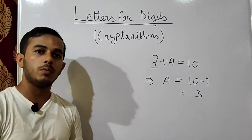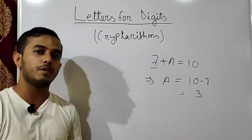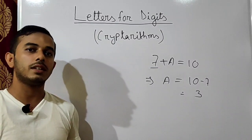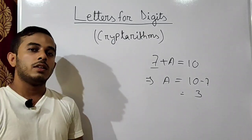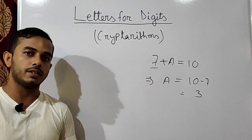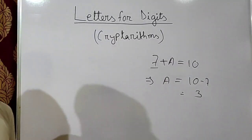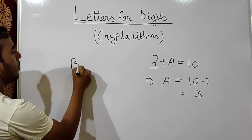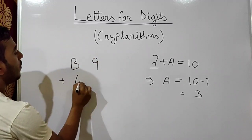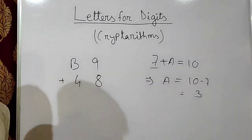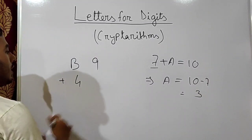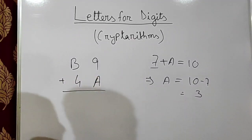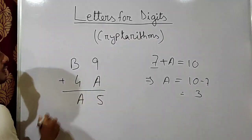Now we will solve a bit trickier and different types of questions and examples so that we have no doubt and can solve the exercise ourselves. The first example is B9 plus 4A equals A5. Here B9 is a 2-digit number, so B is not multiplied with 9.